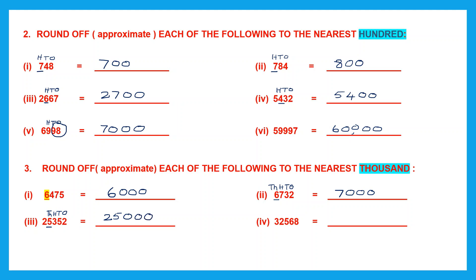Question 4: we have 32,568. 2 is in the thousands place. The digit to the right is 5. That means 2 will change to the next digit: 2 will become 3 and the digit to its left will also remain the same. So 3 and 2 has become 3 now. All the digits to its right will be replaced with 0s — there are 3 digits, so three 0s. Our answer is 33,000.